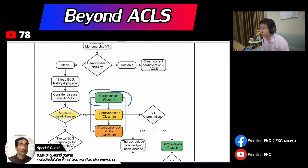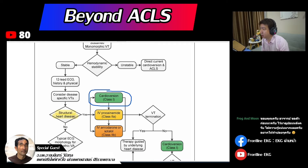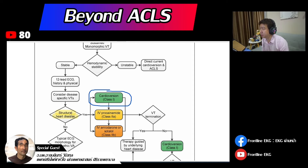Why wide complex tachycardia matters: if we consider the clinical context — if there is known ischemic heart disease, if the patient has heart failure, or if there is poor immune cardiac function — these are very high-risk conditions. The concern is that if the heart function is not good, one more episode will cause hypotension. When we give amiodarone, there is a chance of hypotension, and then we convert rhythm anyway. Finally, we end up with a BP drop and then cardioversion.